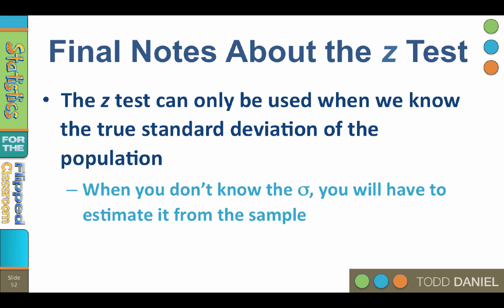However, when we do not know the true standard deviation of the population, we can estimate the standard deviation of the population using the standard deviation of the sample. But when we estimate a population parameter from that sample statistic, it creates an interesting problem that we're going to have to solve next time when we talk about t-tests.